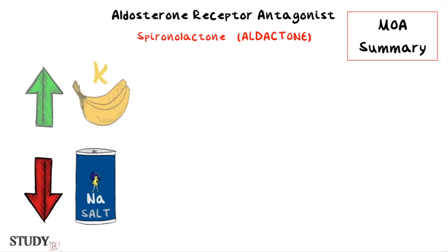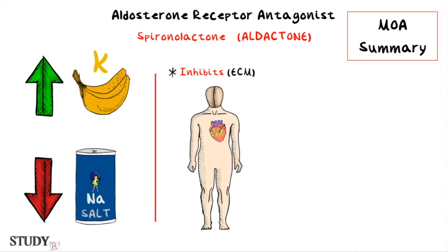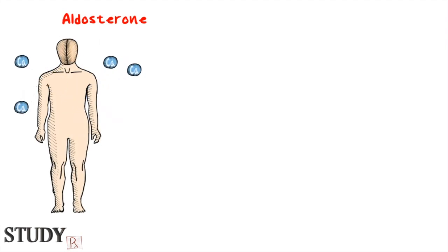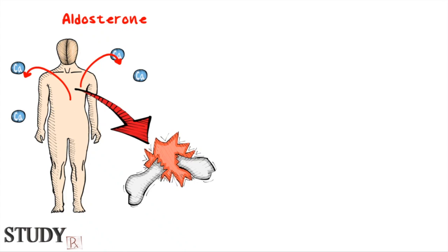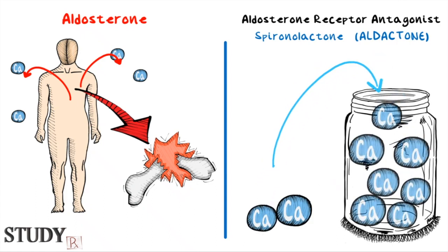So remember these three mechanisms of action for aldosterone receptor antagonists: 1) they decrease sodium reabsorption and increase potassium levels; 2) they inhibit extracellular matrix and collagen deposition; 3) they have anti-inflammatory actions that help with atherosclerosis. One additional mechanism to remember is that aldosterone release also excretes calcium and lowers bone mineral density, which can lead to fractures especially in elderly patients. So aldosterone receptor antagonist medications like spironolactone will also have the effect of maintaining and storing calcium, keeping bone density and protecting against fractures.